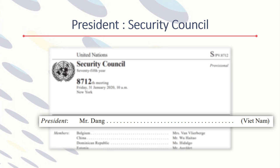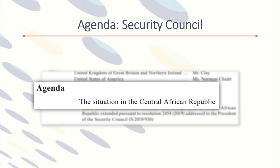Beneath the masthead on Security Council meeting records, we see the President and the other members of the Council and the names of their representatives. After the list of names, the agenda of the meeting is given. Security Council meetings usually only address one topic.